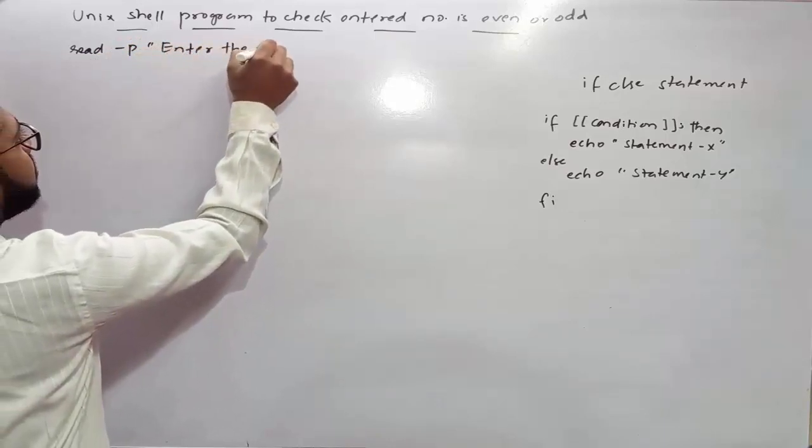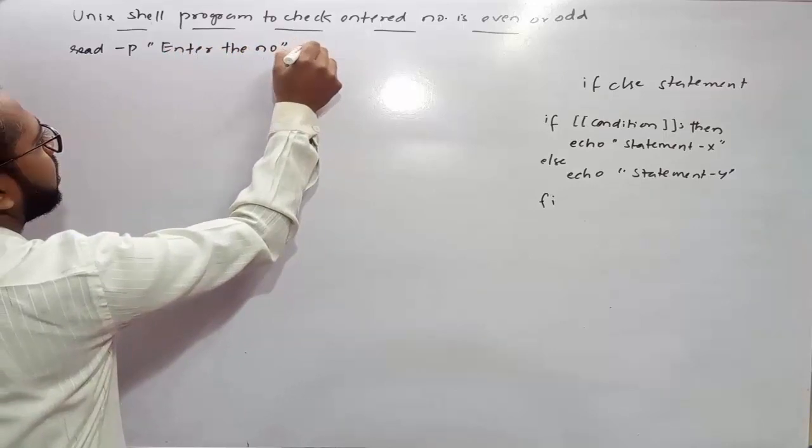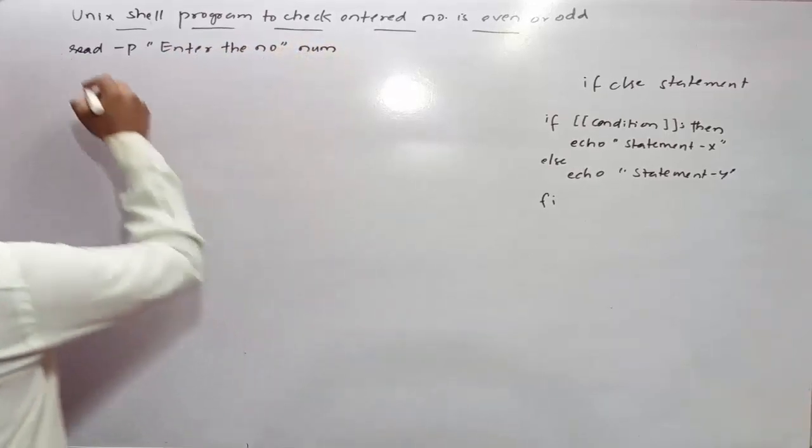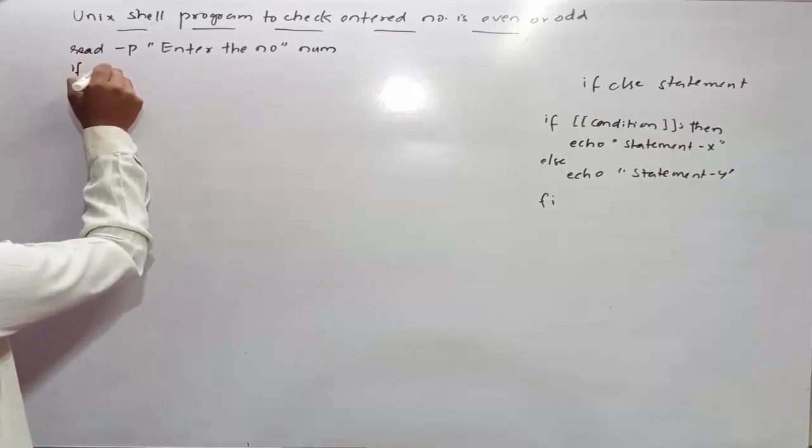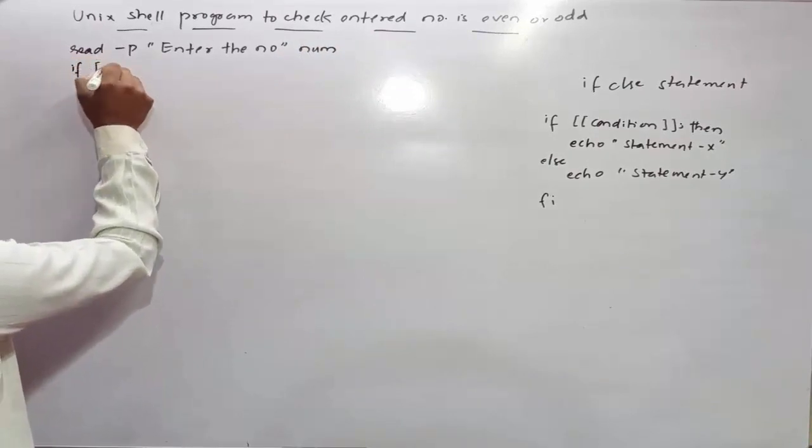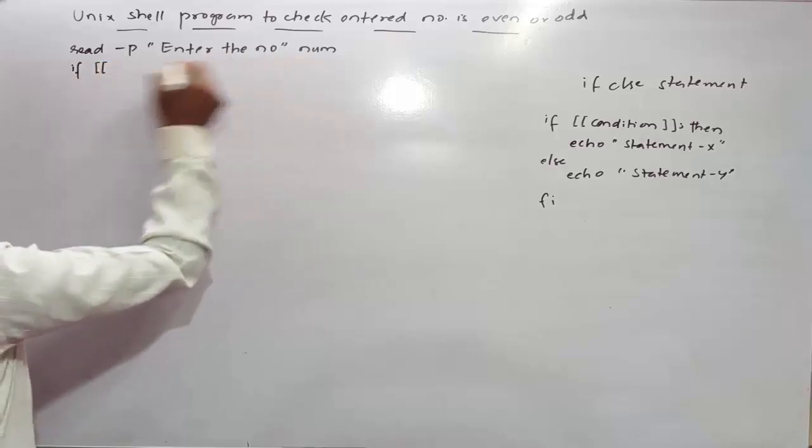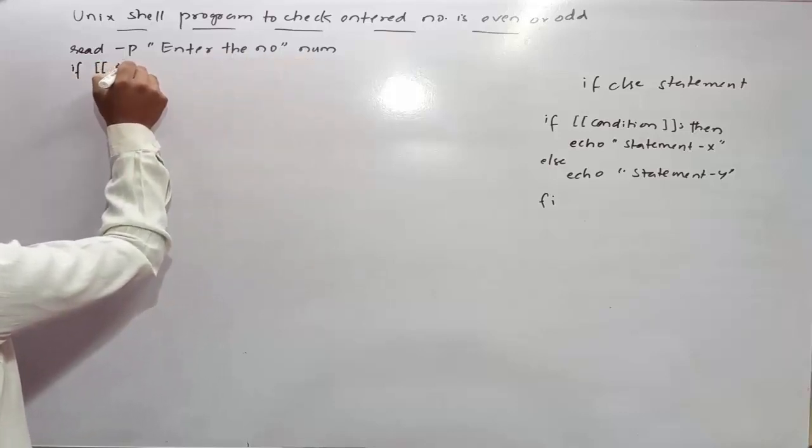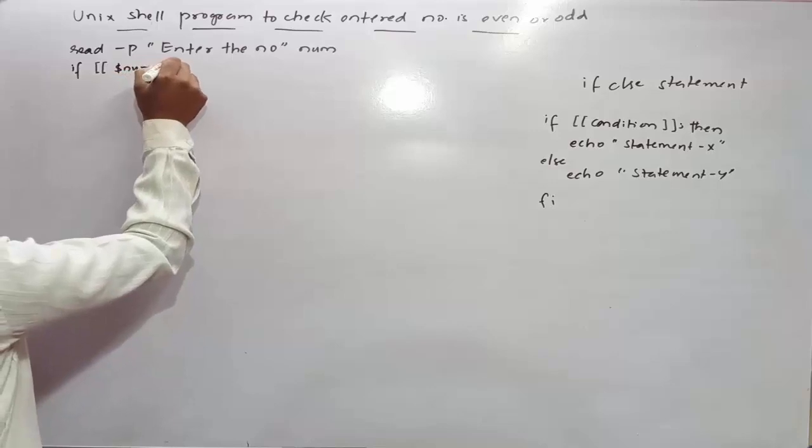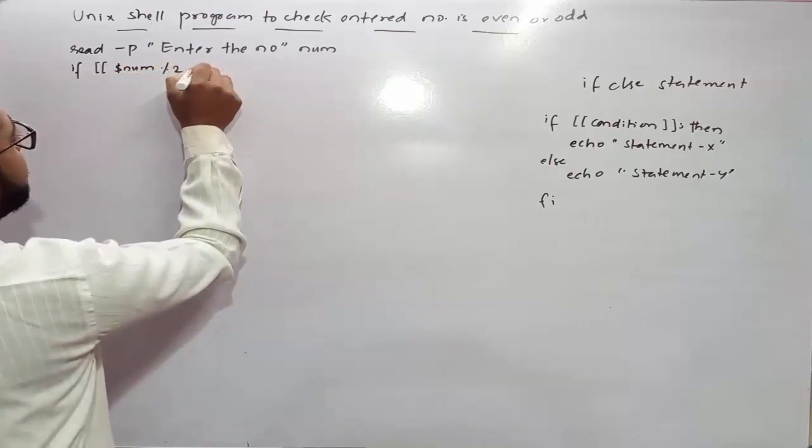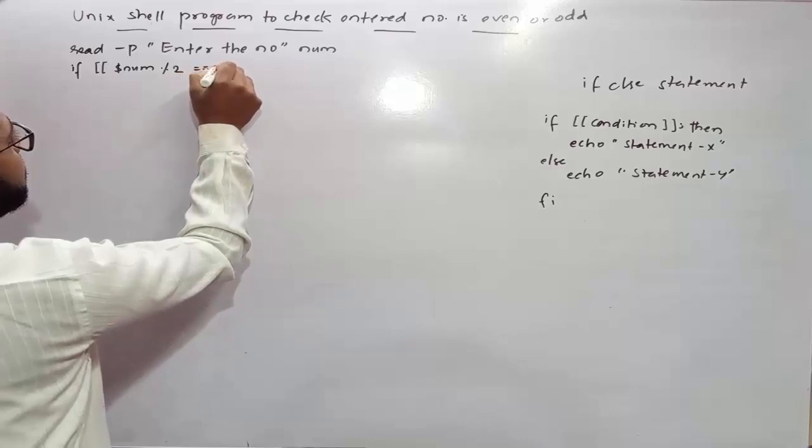Next, I will use if space, put double square open brackets, then you need to use this num: if num mod 2 is equals to equals to zero, close the brackets.